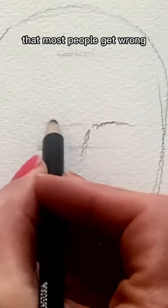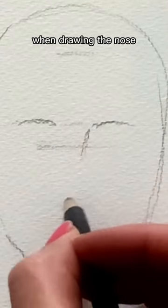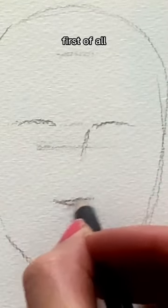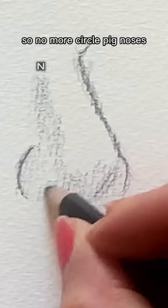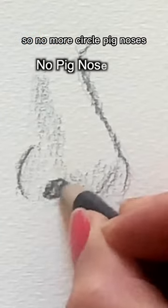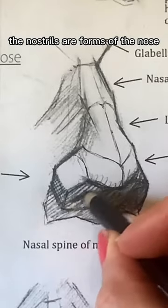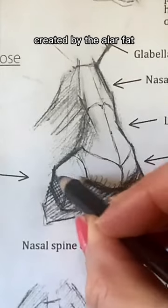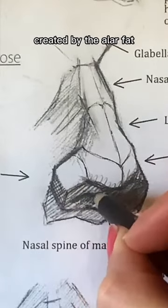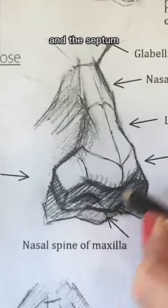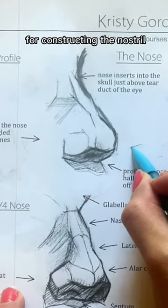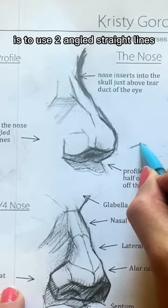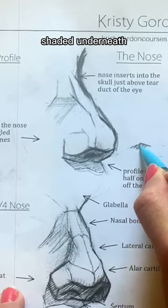There are a few things that most people get wrong when drawing the nose. First of all, the nostrils are not circles — so no more circle pig noses. The nostrils are forms created by the alar fat of the wings of the nose and the septum. What works best for constructing the nostril is to use two angled straight lines shaded underneath.